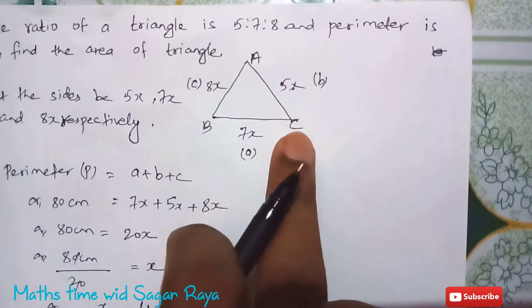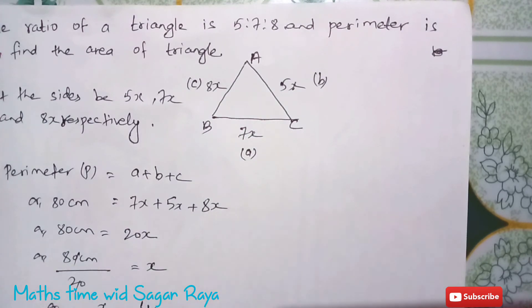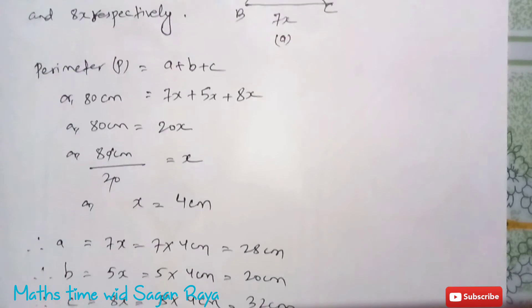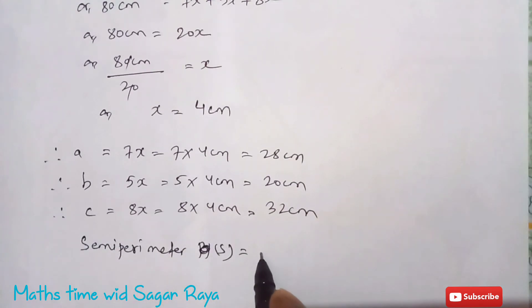And to find the area of scalene triangle we have to first find semi-perimeter. So semi-perimeter equals a plus b plus c divided by 2.